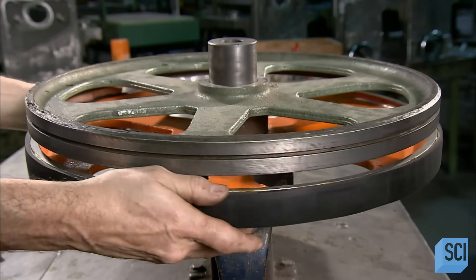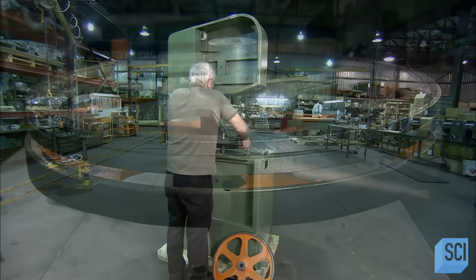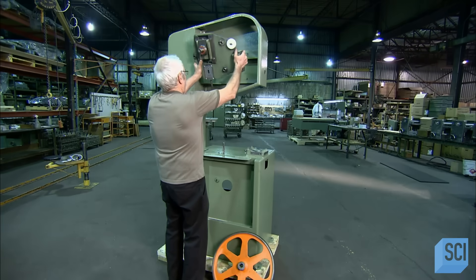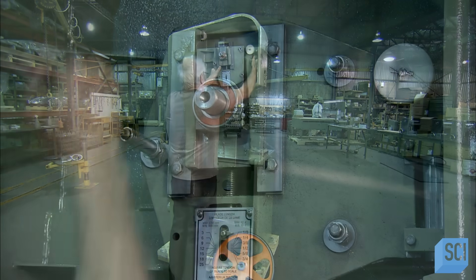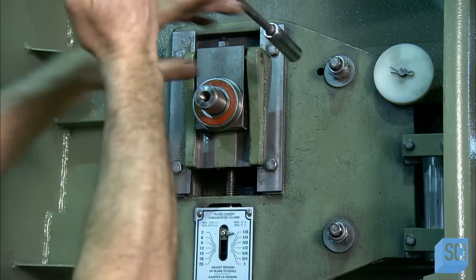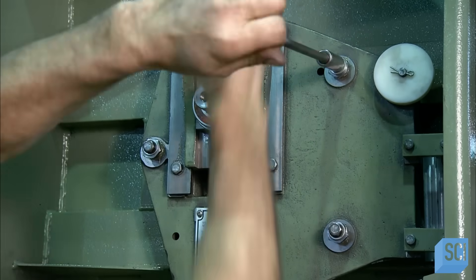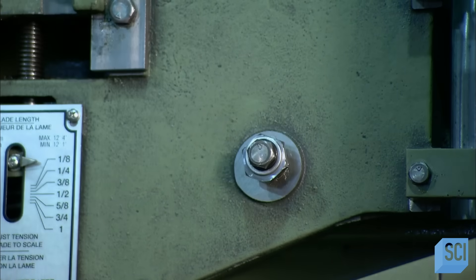The first wheel now has a rubberized edge. They repeat the same procedures for the second wheel. In the meantime, another department has welded the bandsaw steel cabinet. After the cabinet gets a paint job, workers begin installing the various components.